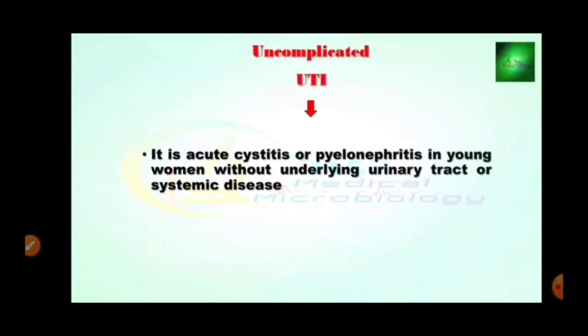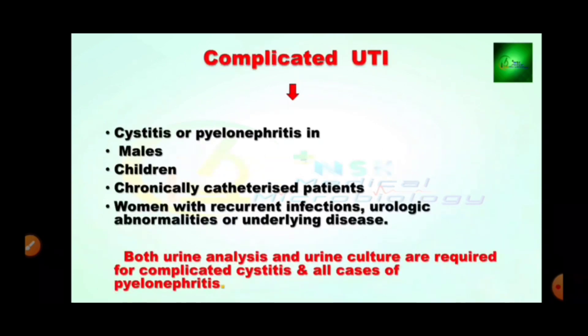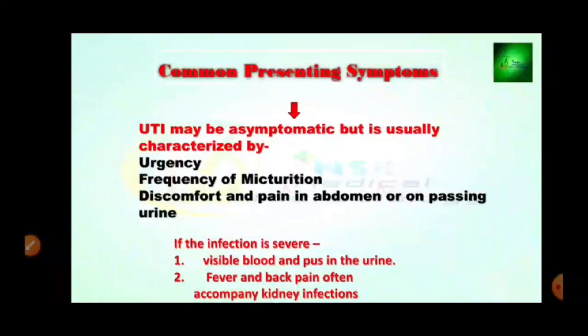UTI is also divided into uncomplicated and complicated types. Uncomplicated UTI is acute cystitis or pyelonephritis in young women without underlying urinary tract or systemic disease — systemic disease circulated by the blood, also known as septicemia. Complicated UTI includes cystitis or pyelonephritis present in males, children, chronically catheterized patients, women with recurrent infections, urologic abnormalities, or underlying disease. Both urine analysis and urine culture are required for complicated cystitis and all cases of pyelonephritis. Urine analysis means microscopic examination tested in microbiology labs.